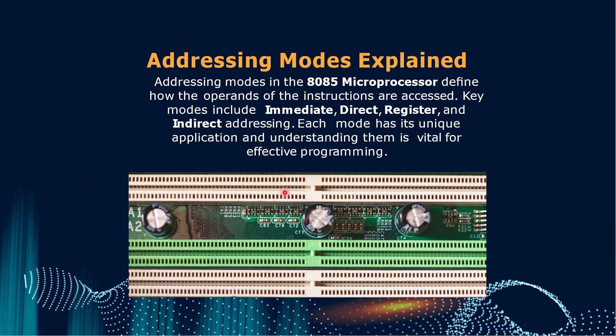There are certain addressing modes as well. Addressing modes in the 8085 microprocessor define how the operands of the instructions are accessed. Key modes include immediate addressing mode, direct addressing mode, register addressing mode, and indirect addressing mode. Each mode has its unique application and understanding them is vital for effective programming.